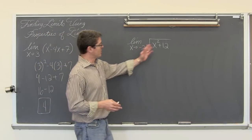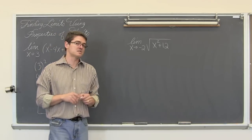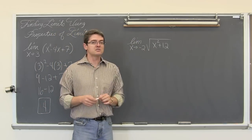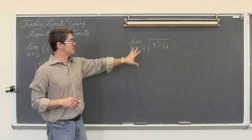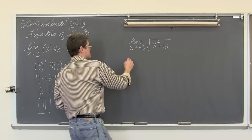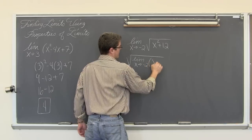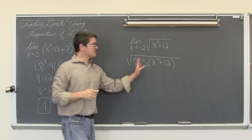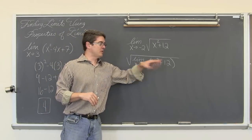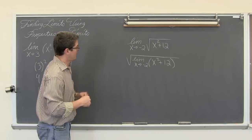Over here we have another function with a square root symbol. We want to find the limit as x approaches negative 2 of the square root of x squared plus 12. We are going to use the property of roots, which says we can apply the limit function to the polynomial inside the square root. This entire expression is not a polynomial because of the square root symbol, so we take the square root of the limit as x approaches negative 2 of x squared plus 12. Looking at x squared plus 12, this is a polynomial with all real coefficients and whole number exponents.